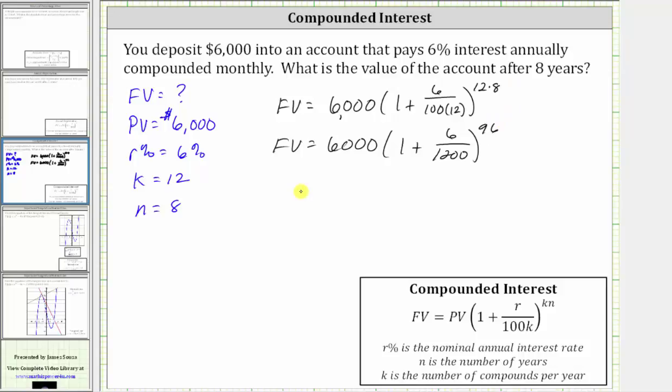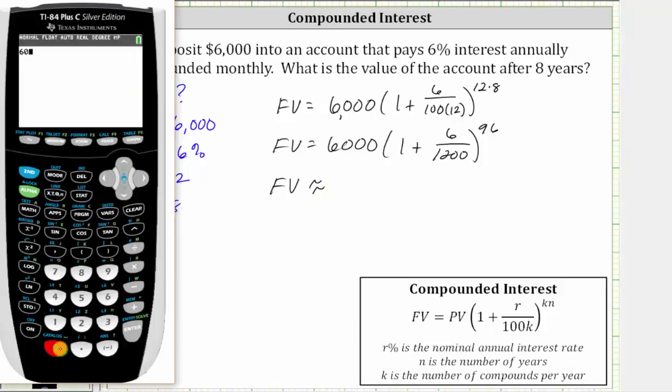Now we will go to the calculator and get our decimal approximation. We enter 6,000, open parenthesis, one plus six divided by 1,200, close parenthesis, raise to the power of 96, and enter. The future value to the nearest cent is $9,684.86.